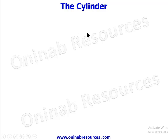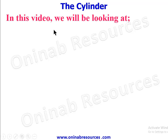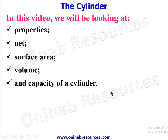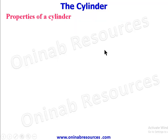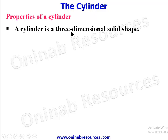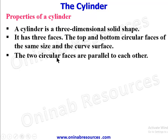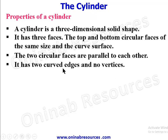Hello and welcome to this tutorial on the cylinder. In this video we'll be looking at properties, net, surface area, volume, and capacity of a cylinder. A cylinder is a three-dimensional solid shape. It has three faces: the top and bottom circular faces of the same size, and the curved surface. The two circular faces are parallel to each other. It has two curved edges and no vertices.